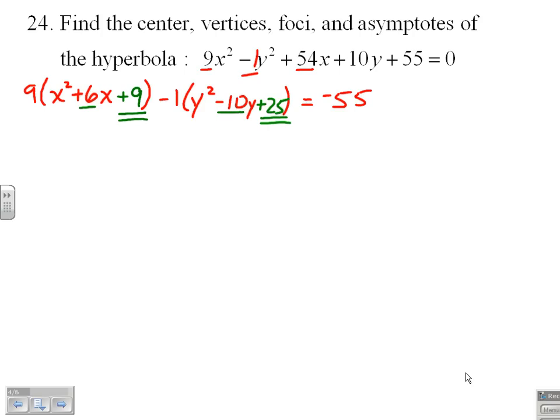So, do I add 9 and add 25 to the right side to balance? Not necessarily. When I put the plus 9 in over here, I really added 81. When I put the plus 25 in here, I really subtracted 25. I'm at a point now where I have completed squares, so this becomes 9 times (x + 3)² minus (y - 5)² equals negative 55 plus 81 minus 25, which is 1.